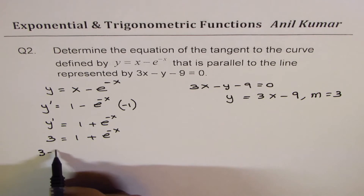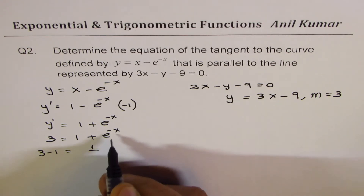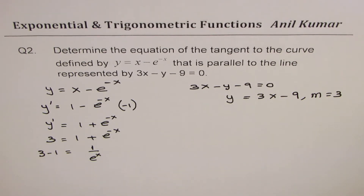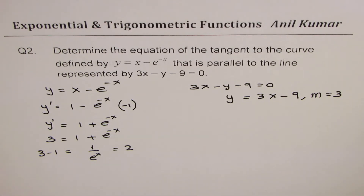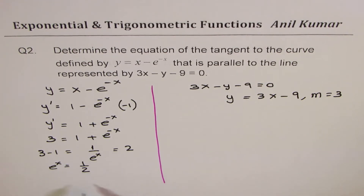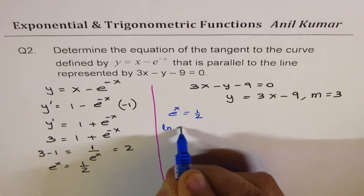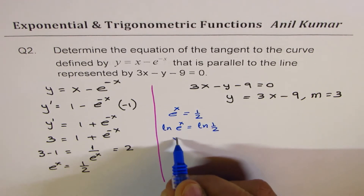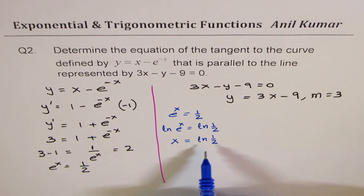Taking 1 to the other side gives e to the power of minus x, which is 1 over e to the power of x, equals 2. So e to the power of x equals 1 over 2. Taking the natural log of both sides: x equals ln(1/2). So at x equals ln(1/2), the curve has a slope of 3.